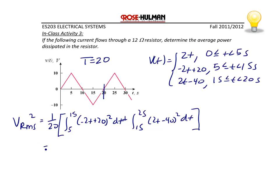So by solving this integral, we get 33.33, or v_RMS is equal to 5.77 volts. So the power delivered to a 12 ohm resistor would be v_RMS squared over R, which is 33.33 divided by 12, which equals 2.78 watts.